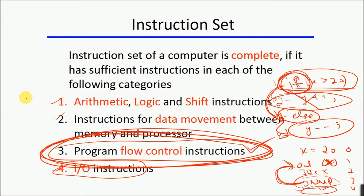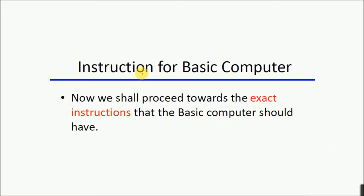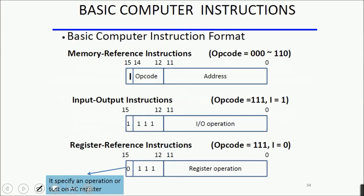So we have effectively four different types — or categories — of instructions that must be included in a computer's instruction set. For this basic computer we are going to develop the instruction set. The basic computer instructions are divided into three technical types: memory reference instructions, input/output instructions, and register reference instructions.